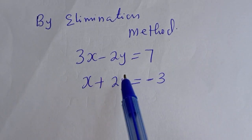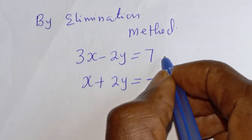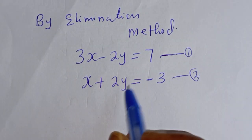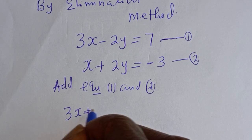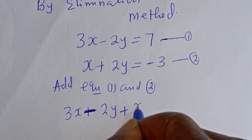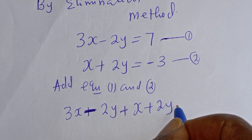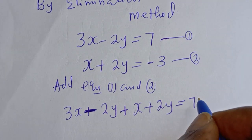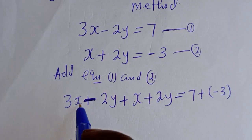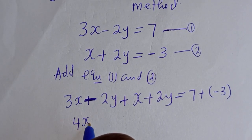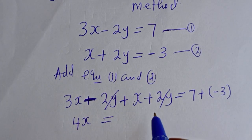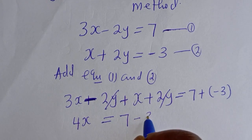Now let's consider the second method — the elimination method. This is the simplest method. We add equation 1 and equation 2 together: 3x minus 2y plus x plus 2y is equal to 7 plus minus 3. So 3x plus x gives 4x, and minus 2y plus 2y cancels out, giving 4x is equal to 7 minus 3.